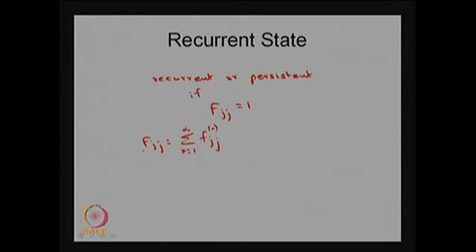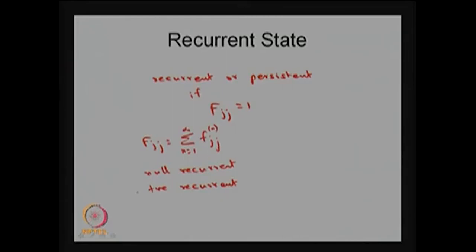We can classify the recurrent state into two forms: null recurrent and positive recurrent, based on the mean passage time value. Based on Fjj we classify a state as recurrent. Then based on the mean first passage time, we further classify: if μjj is a finite value, the recurrent state is a positive recurrent state. If μjj is infinite — meaning on average the first passage time is infinite — then that recurrent state is called a null recurrent state.